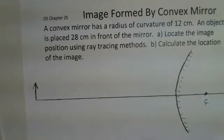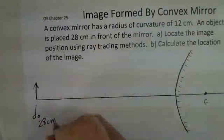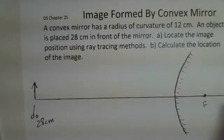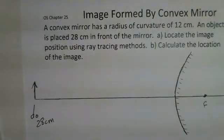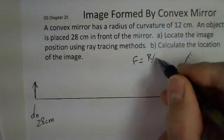The object position is 28 centimeters. The mirror has a radius of curvature of 12 centimeters, and we know that the focal length is the radius of curvature divided by 2.